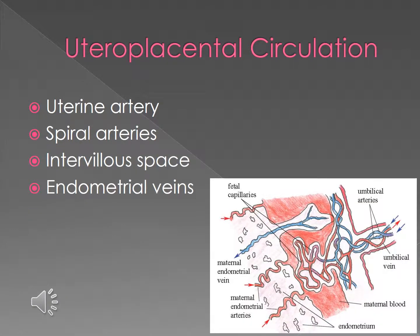The uterine artery branches into approximately 80 to 100 spiral arteries which open in the middle of the placenta. Blood flows through the uterine arteries into the intravillus space and passes over the villus surfaces towards the chorionic plate. Maternal blood leaves via the endometrial veins near the periphery of the placenta. The intravillus space of a mature placenta contains about 150 mL of blood, replenished 3 or 4 times a minute. Uteroplacental blood flow increases from 50 mL per minute at 10 weeks to 500 to 600 mL per minute at full term.